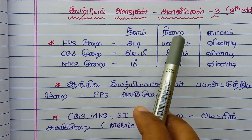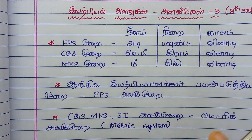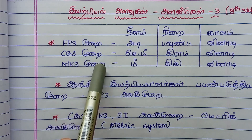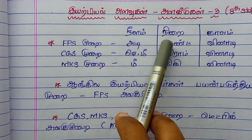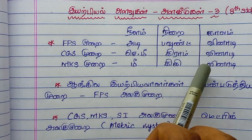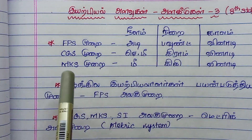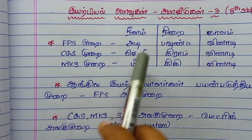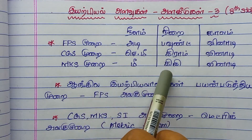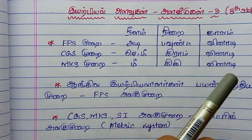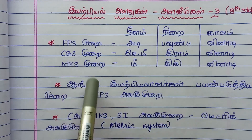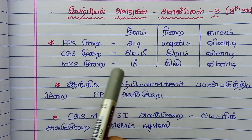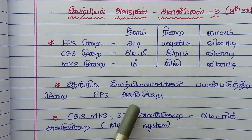We will talk about the CGS system. You can write the CGS size. There are 150 grams of CGS. We also have 100 grams and 160 grams of CGS.